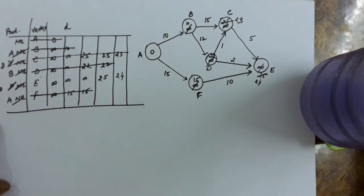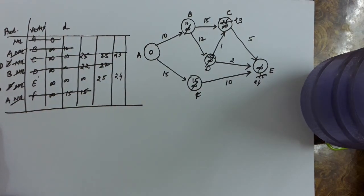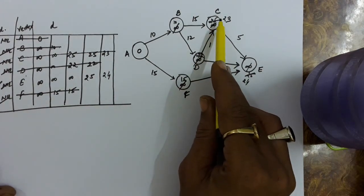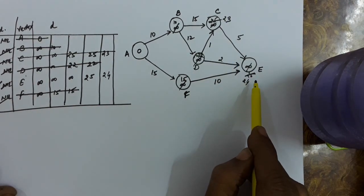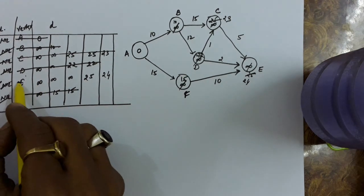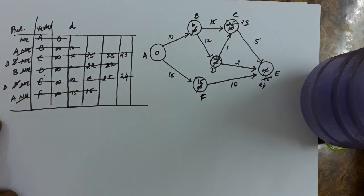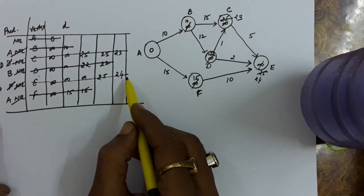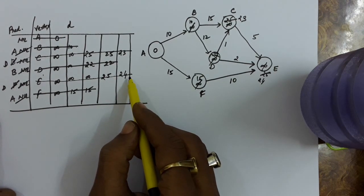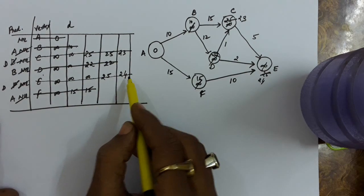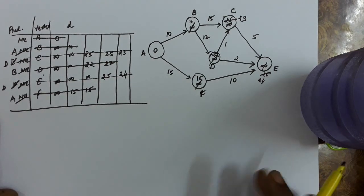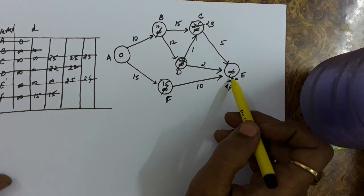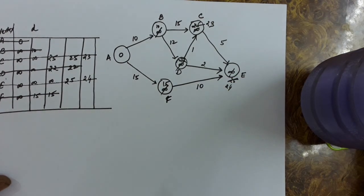Now we delete the minimum cost vertex, which is C with distance 23. We see the connection from C: C to E has cost 5. So 23 plus 5 = 28, which is not less than 24, so we will not update this. Next we delete E with distance 24. This is the only vertex remaining, so there will be no update from E. There is also no outgoing edge from E, so there is no question of updating.